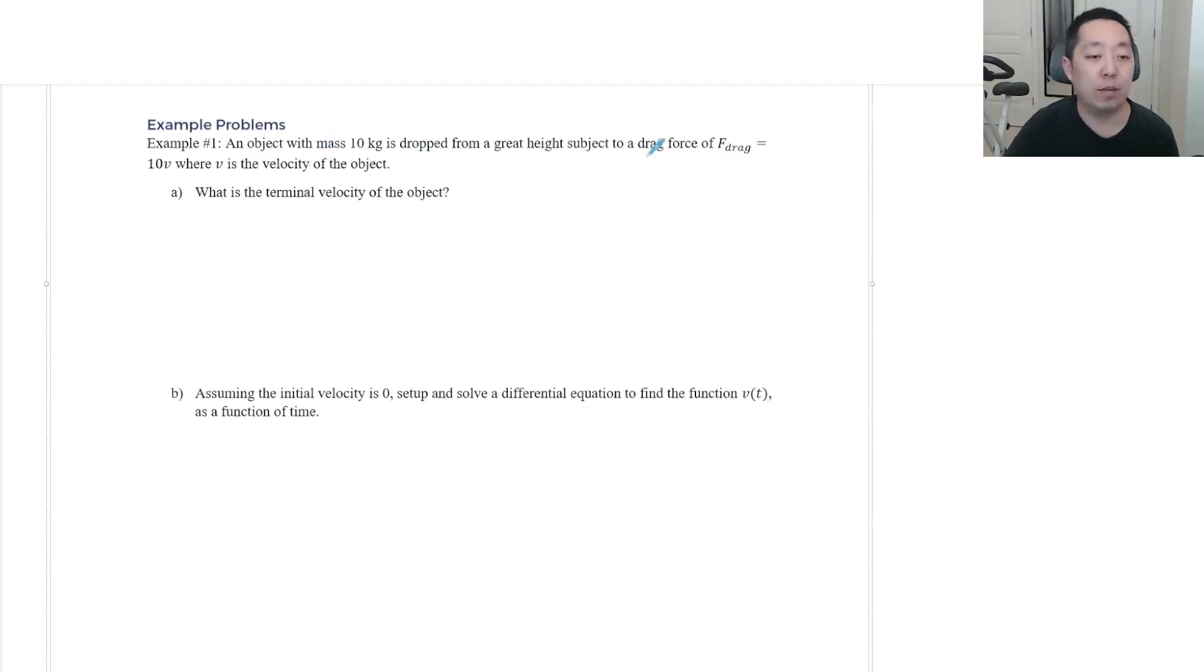So let's look at some example problems when we're dealing with these drag forces. So we have an object with mass 10 kilograms is dropped from a great height subject to this drag force. F drag equals 10v where v is the velocity of the object. What is the terminal velocity of the object? Now remember, if we look at the free body diagram, we have mg going down. And we have 10v going up. That's the force. And when we're going to have terminal velocity is when the acceleration is zero, the velocity is no longer changing anymore. And that means the net force would have to equal zero then, because the net force equals ma. And that would occur when mg is equal to 10v, or v is equal to mg over 10. And let's say that's 10 is the mass g is 9.8, or you can use 10 divided by 10. But that's 9.8 meters per second.